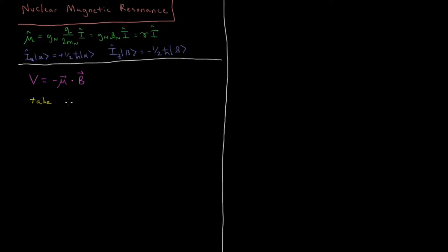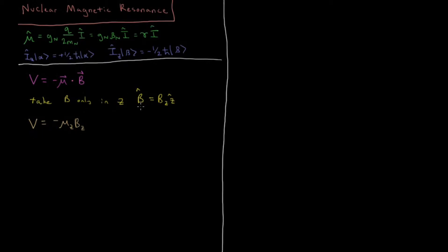We take B to be only in the Z direction, so our magnetic field B is just equal to its Z component times the Z direction. That means our interaction of our magnetic dipole and our magnetic field is just going to equal negative the Z component of our magnetic dipole times the Z component of our magnetic field, which is our entire magnetic field as we have defined it.